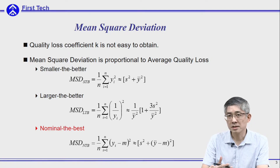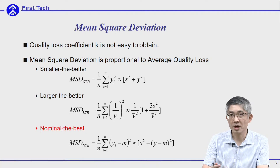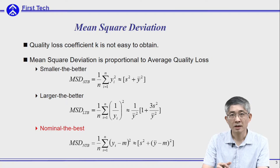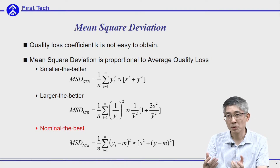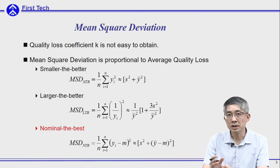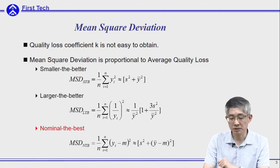This is a pretty new concept for the typical engineer. They are not familiar with this average quality loss. In order to make quality control engineers accept his proposed quality measure, he borrowed the concept from communication systems: the signal-to-noise ratio.